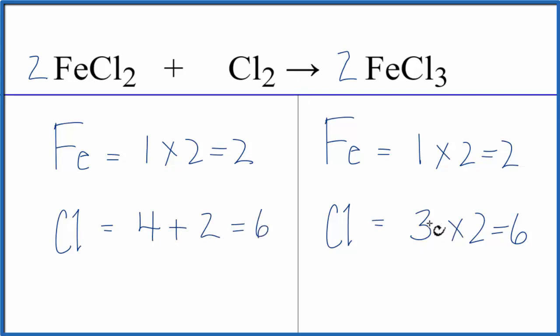This equation is balanced. The trick here really was to get the odd number to an even number to make balancing much easier. This is Dr. B with the balanced equation for iron 2 chloride plus chlorine gas. Thanks for watching.